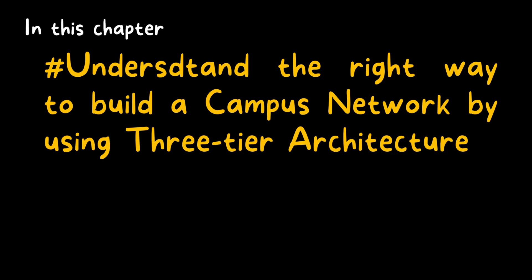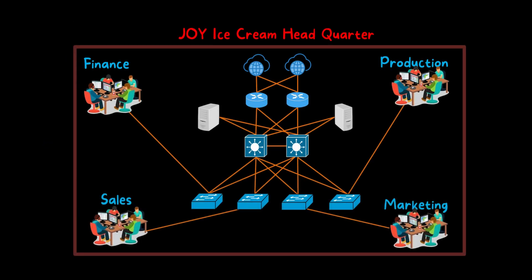By using three-tier architecture, this is the headquarter of Joy Ice Cream Company, which is run by the entrepreneur James. He was running this business first in his home, and when his business grew he decided to move into a leased office space. Here you can see there are four access switches available in the access layer, which is also called tier one. The main function of this access switch is to provide network connectivity to end user devices like PC, printer, access point, etc.